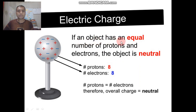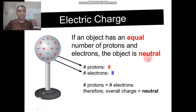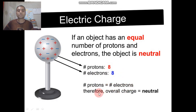If an object has an equal number of protons and electrons, the object is neutral. In this figure the number of protons is 8 and the number of electrons is 8 — the number of protons equals the number of electrons. Therefore the overall charge is neutral.